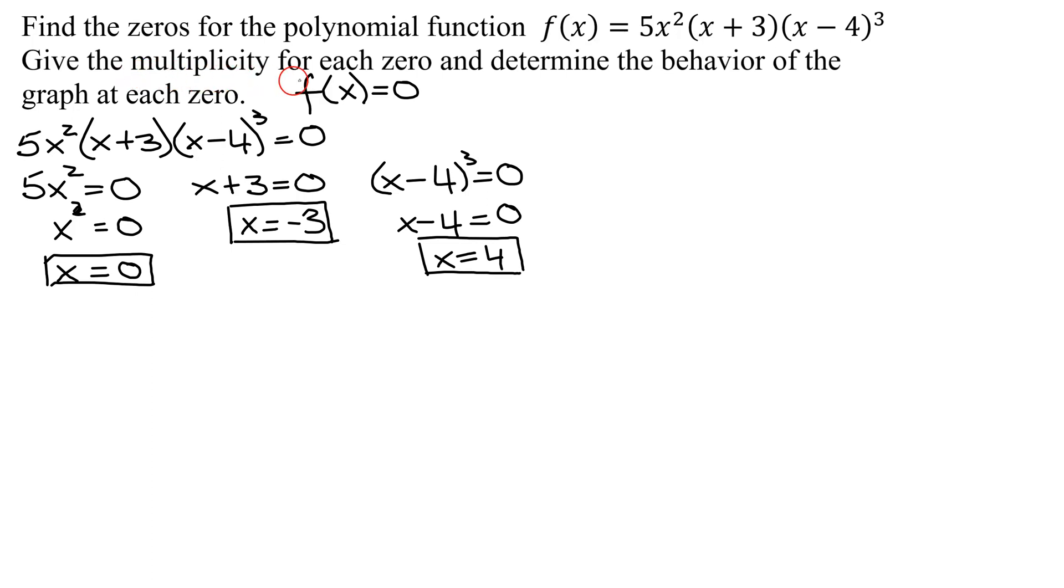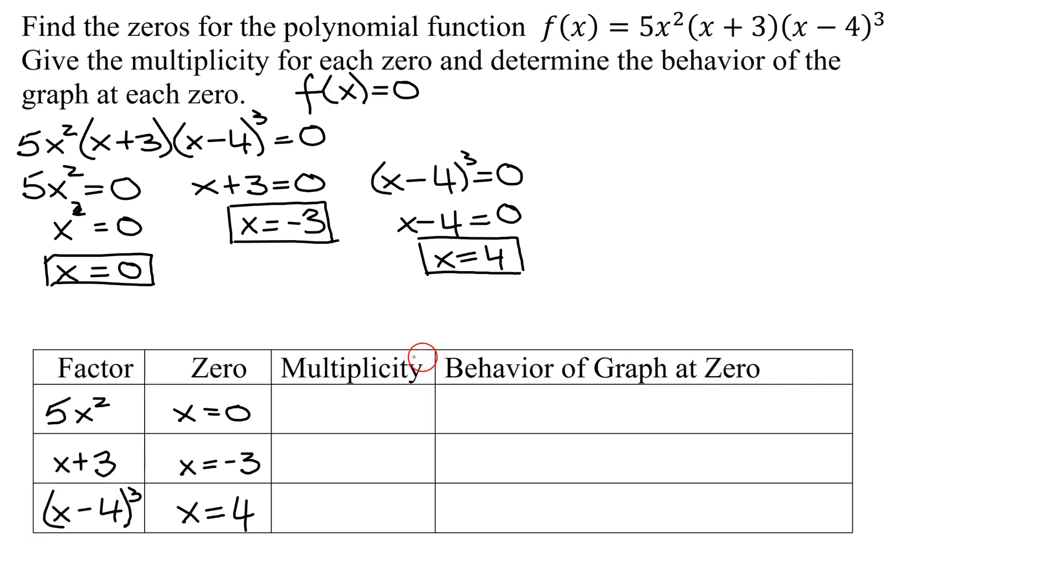Now we need to look at the multiplicity for each zero and determine the behavior of the graph at each zero. In these polynomial problems, when you have multiple zeros and factors and multiplicities, I find it helps keep all the information straight if you put it in a table. So here is the table. I have the factors, the zeros, the multiplicity, and the behavior of the graph at that zero. I've already put in my factors from up here and the zeros that I found that went with each of those factors.